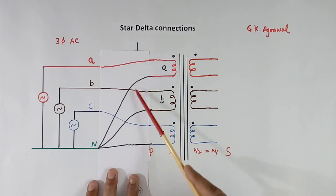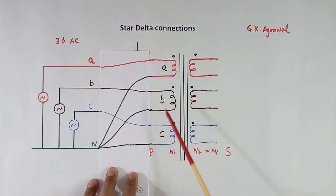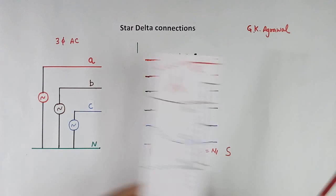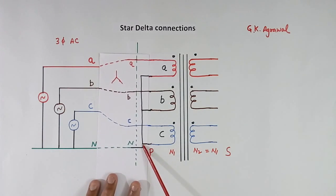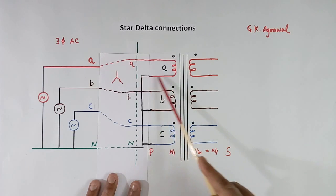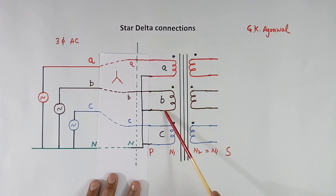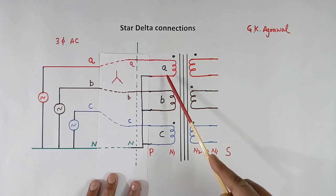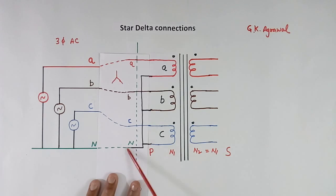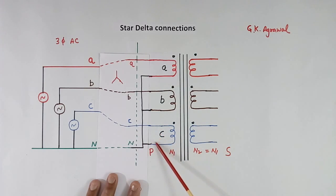If you want to connect the transformer only in star mode, there is another way. The transformer manufacturer connects the other terminal of the 3 phases — A, B, C — inside itself, so only 1 neutral wire comes out. You get 4 wires: A, B, C, and neutral. But in this way, you can connect this winding only in star, not in delta mode.